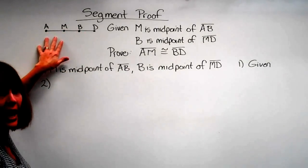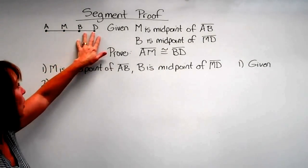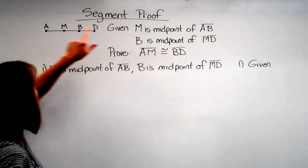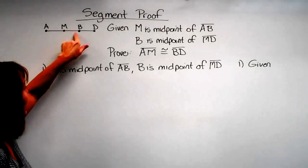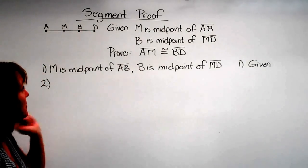So here's a diagram we've been given: A, M, B, and D. We've been given that M is the midpoint of AB, and that B is the midpoint of MD.